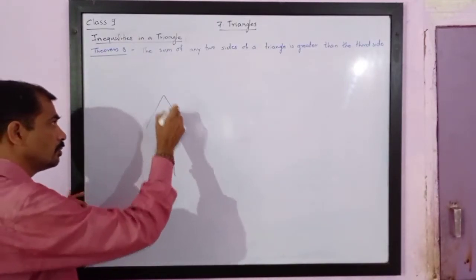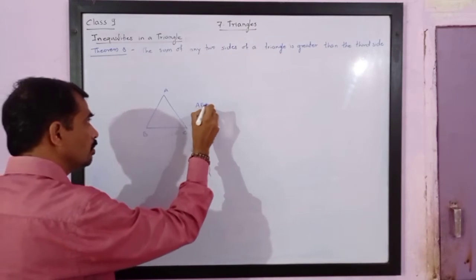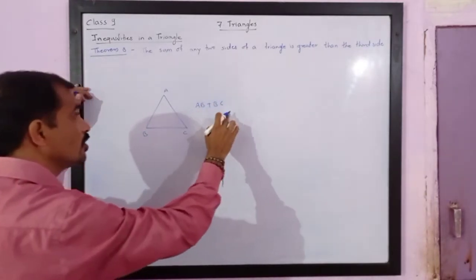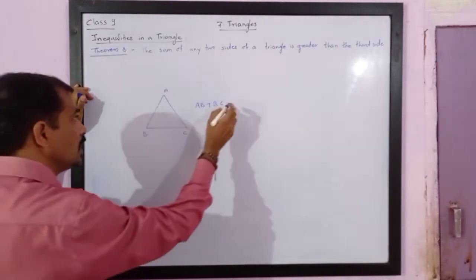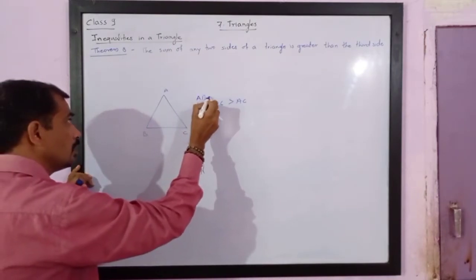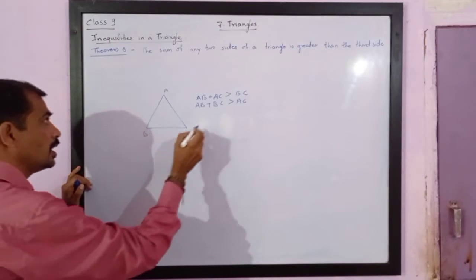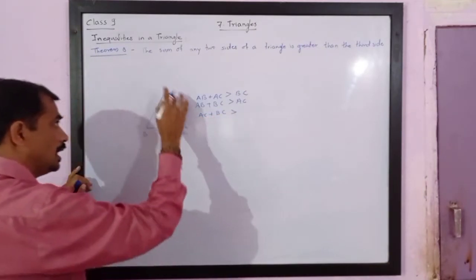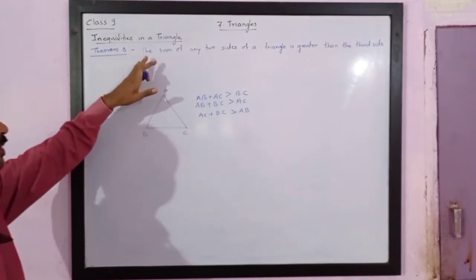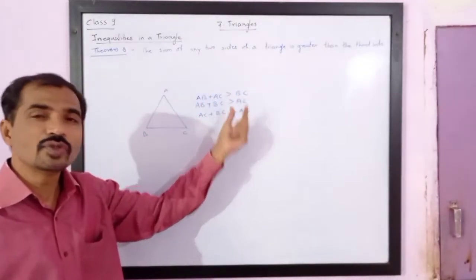We need to prove that if this is triangle ABC, we have to prove that AB plus BC is greater than AC. We have to also prove that AB plus AC is greater than BC, and we have to prove that AC plus BC is greater than AB. These three things we need to prove — the sum of any two sides of a triangle is greater than the remaining third side.